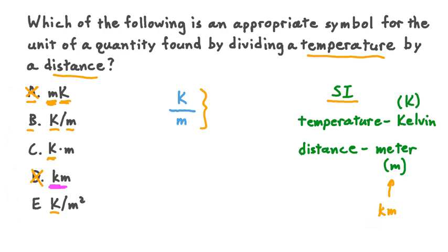Moving on to option B, this shows us a temperature in kelvin divided by a distance in meters. This matches the symbol that we were looking for, so option B looks like it might be our answer. Before we make it our final choice, though, let's look at options C and E.